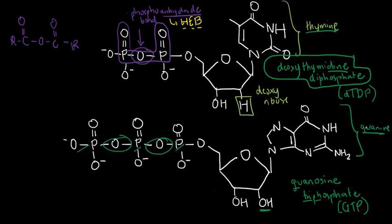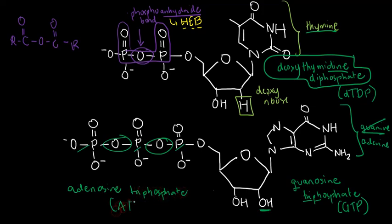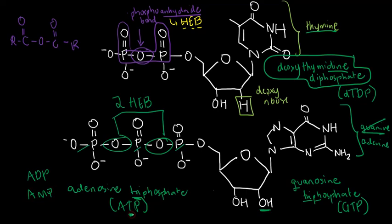If I change the base to adenine, that would give us adenosine triphosphate — which, if you remember from high school biology, is said to be the most common unit of energy in metabolism. It makes sense now because adenosine triphosphate has three phosphates, meaning two high-energy phosphoanhydride bonds. Compared to adenosine diphosphate or monophosphate, ATP has the most energy given its phosphates and high-energy bonds — that is why triphosphates are chosen as energy sources.